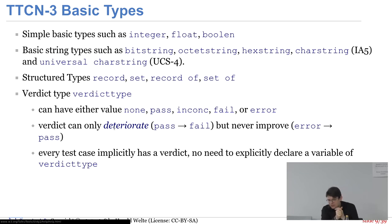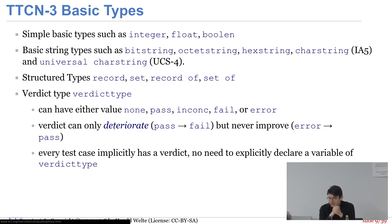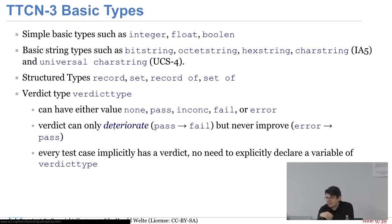Aus diesen Typen baut man strukturierte größere Typen. Ein Record ist wie eine Struct in C, geordnet mit definierter Reihenfolge der Felder. Ein Set hat eine beliebige Reihenfolge der Felder. Record-of ist ein Array – eine Sammlung mit definierter Reihenfolge gleichartiger Elemente. Set-of hat wieder beliebige Reihenfolge, sodass zwei Sets auch bei permutierter Reihenfolge identisch sind.